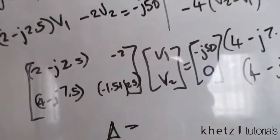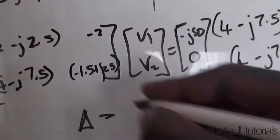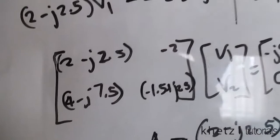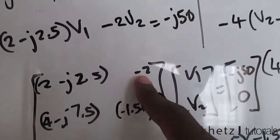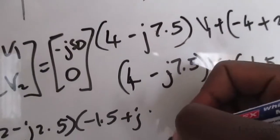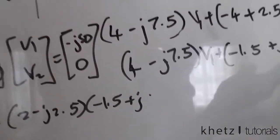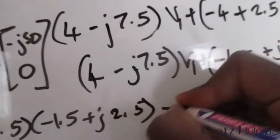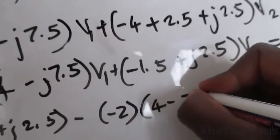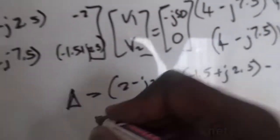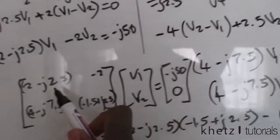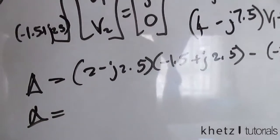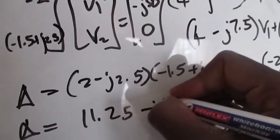To find the determinant Δ of the coefficient matrix, we multiply the main diagonal (2 − j2.5)(−1.5 + j2.5) and subtract the product of the other diagonal (−2)(4 − j7.5). Punching this into the calculator gives Δ = 11.25 − j6.25.